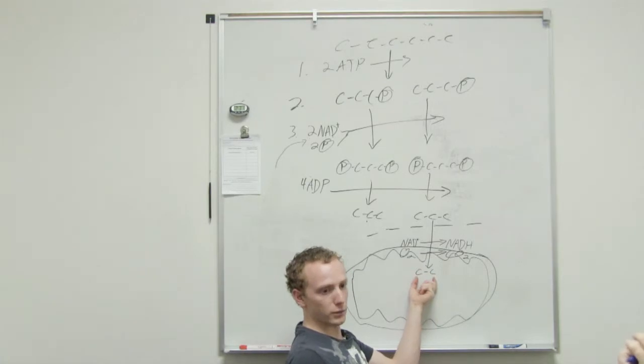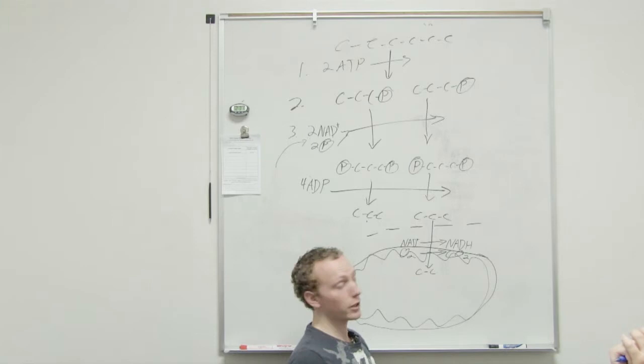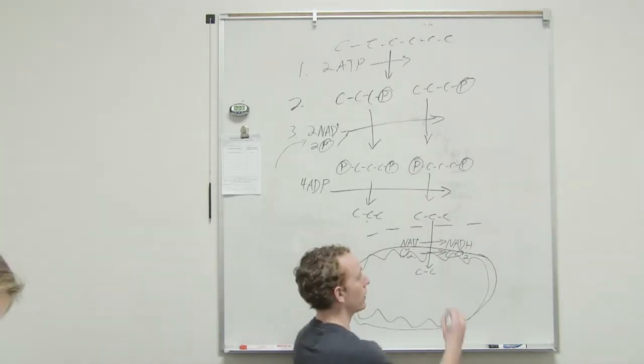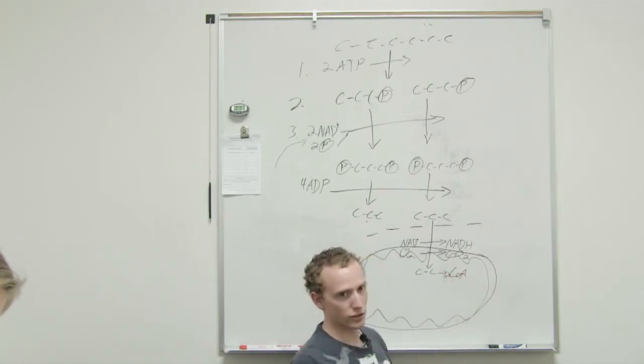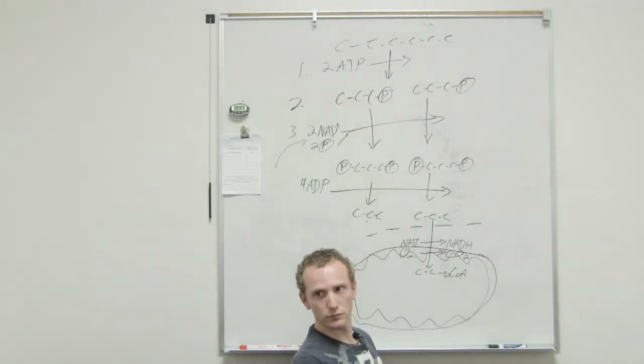This two-carbon chain with the other groups it has on it is called an acetyl group. So the acetyl group is going to attach to coenzyme A, creating an acetyl-CoA. Does that make sense?